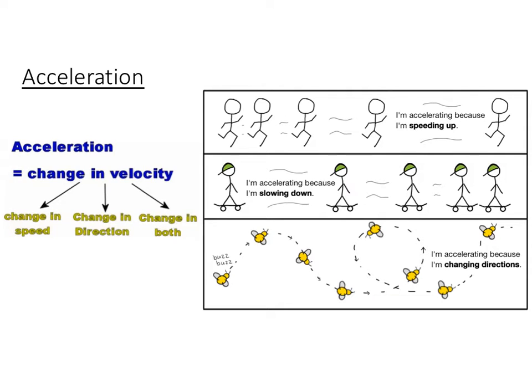Our little skateboard dude looks like he is slowing down, but that is still accelerating because he's changing his speed. And then we have little bumblebee here. He's buzzing all around in circles and looping back and forth. So even though he might be traveling at a constant velocity, he's changing his direction, which is, again, acceleration.